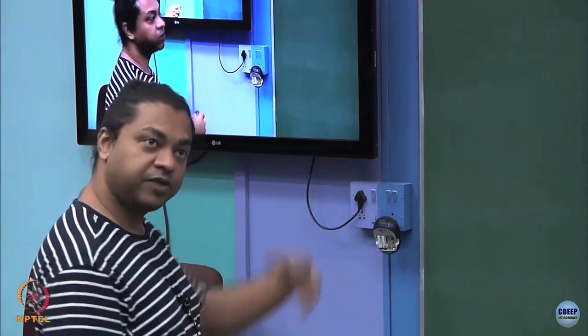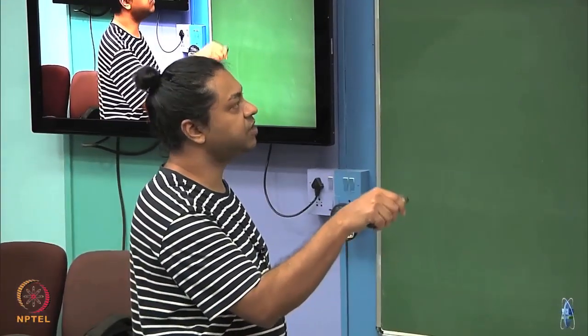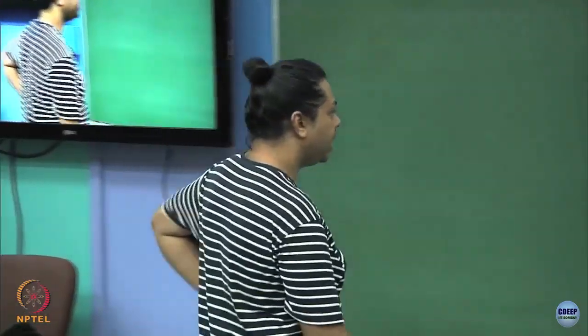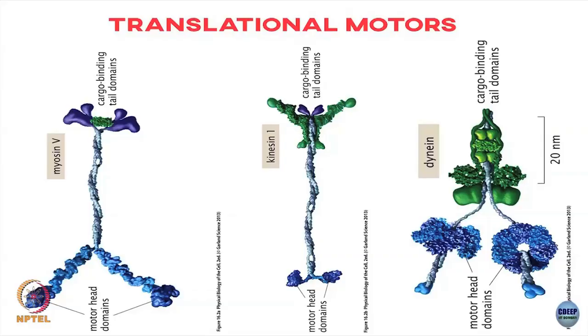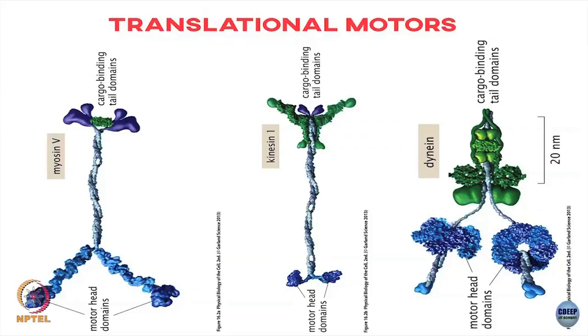The head domains of kinesin are much smaller and the tail domains look different, so structurally this is different from the myosin family, but functionally the structure is somewhat conserved in that you have head domains which bind to the track - the microtubule in this case - and tail domains which bind to the cargo. Finally there is the other class which is dyneins. These also walk along microtubule filaments except they walk in the reverse direction - from the plus end of microtubules towards the minus end, as opposed to kinesins. The dynein structure is somewhat more complicated than kinesins or myosins, but at the simplest level you have head domains which bind to the microtubule and tail domains which bind to the cargo.